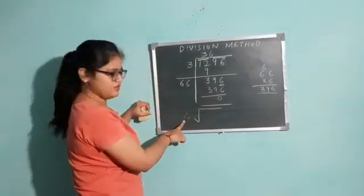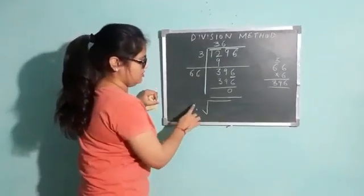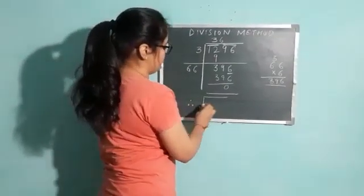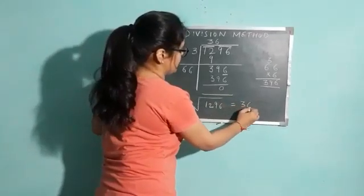Therefore, this is the symbol of therefore. The three dots. This represents therefore. Therefore, square root of 1296 is equal to 36.